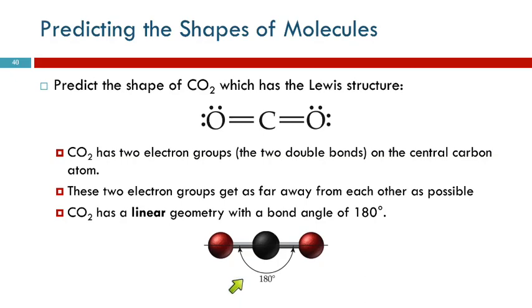That determines the shape of the molecule. This shape is called linear because these atoms are in a line. The bond angle here is 180 degrees.